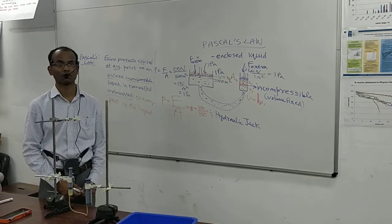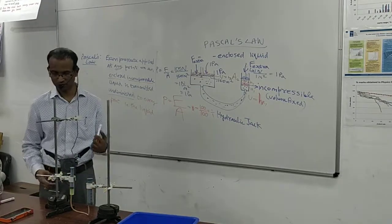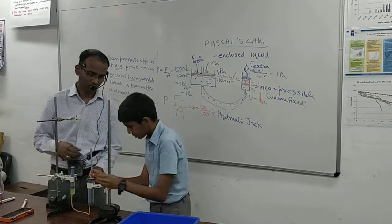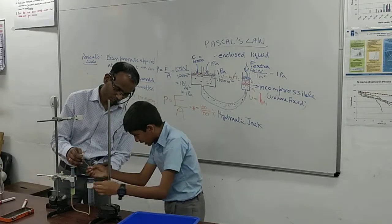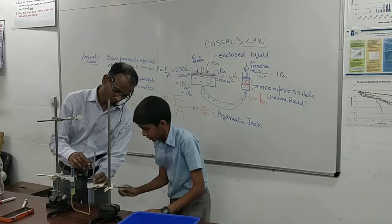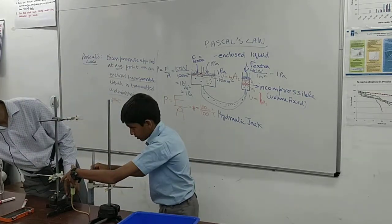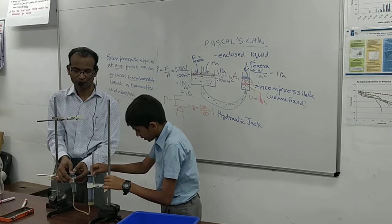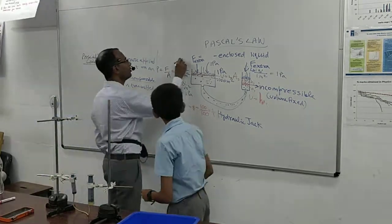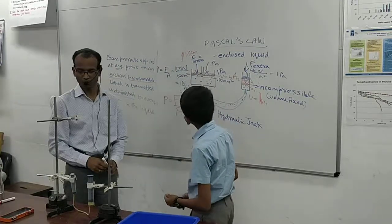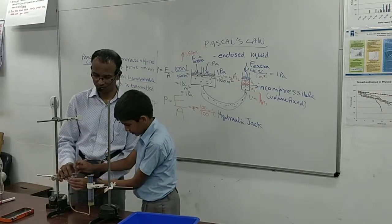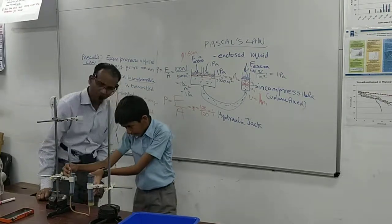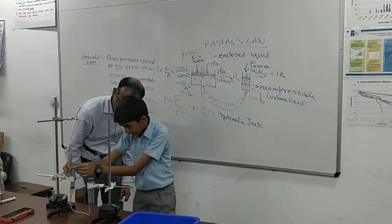A student wants to verify the displacement with a scale. The teacher encourages this. They measure: pressing one piston, the other moves up 1.5 centimeters. Then they check the other piston. Keep the scale at zero for the initial position, then press — it moves about 1 centimeter. This verifies that the piston with a larger area moves a smaller distance, consistent with the conservation of volume.